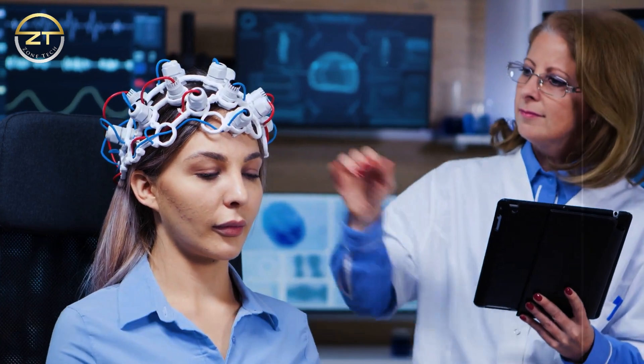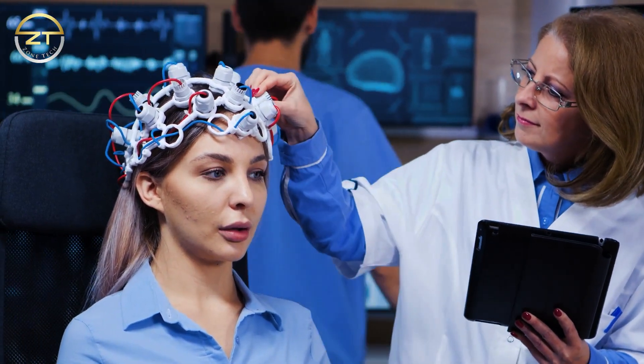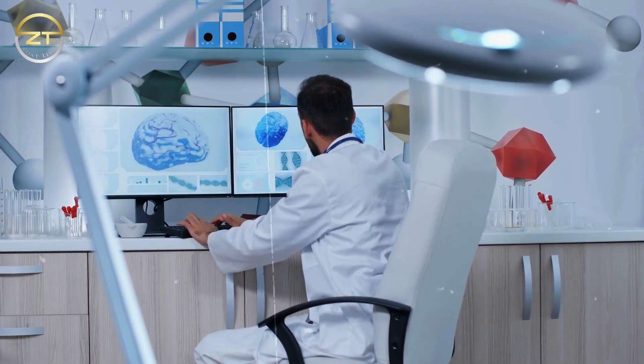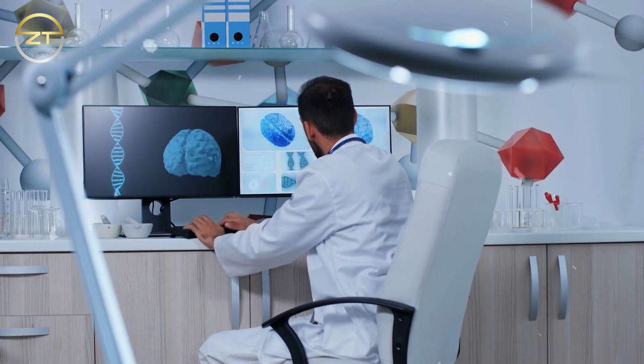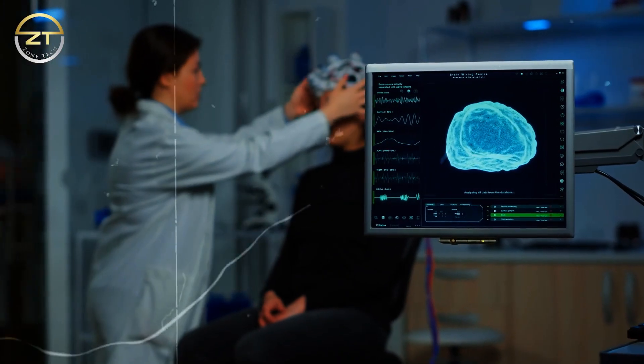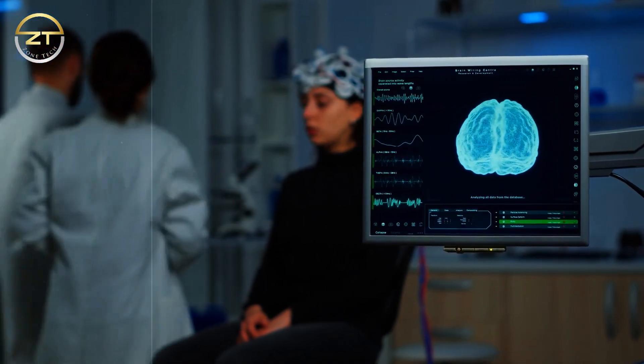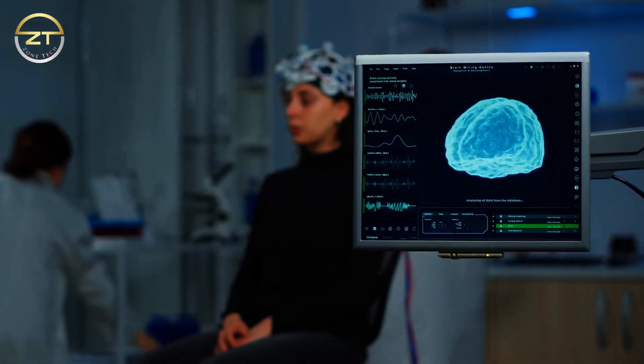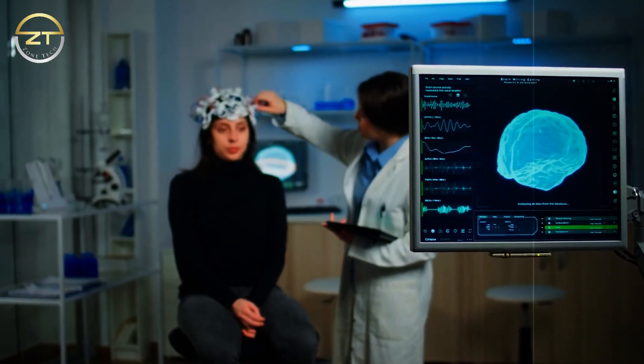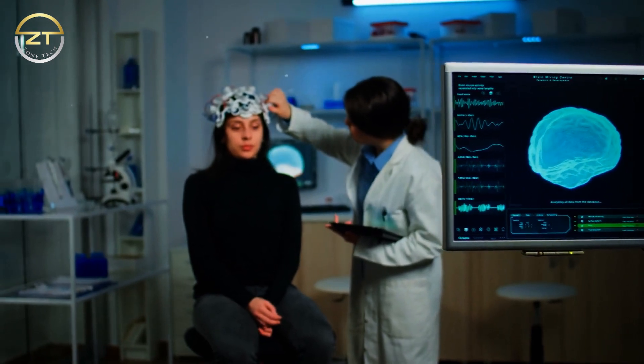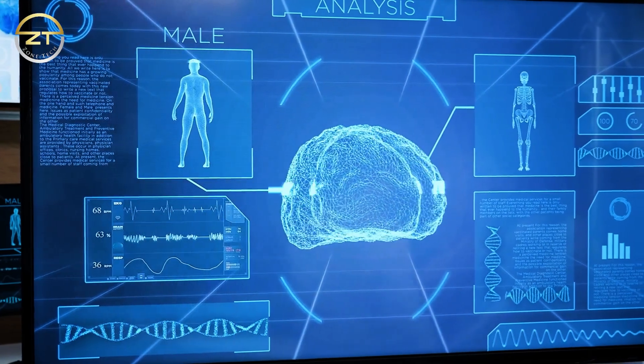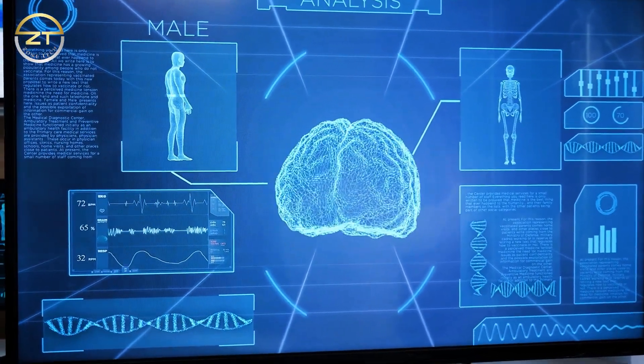Ethical considerations: The intersection of neuroscience and artificial intelligence raises important ethical considerations that need to be addressed as technology advances. One major concern is privacy and data protection, particularly in the context of brain-computer interfaces, which can access sensitive personal information such as thoughts, emotions, and intentions. There is a need to develop robust ethical guidelines and regulations to ensure that BCIs are used safely and responsibly and that personal data is protected from unauthorized access or misuse.